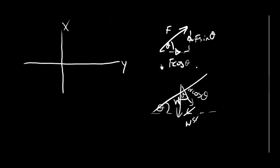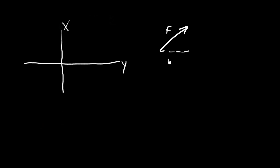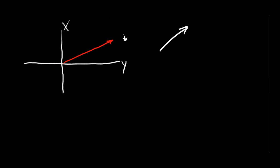In this question we're doing something slightly different because the final answer isn't just splitting one force into components — we do have to split them up first, but then we have to add them together to get a final resultant. The question gives us a set of three forces: one going at an angle labelled Q, another going in a different direction labelled R, and one going straight down from the origin labelled P.